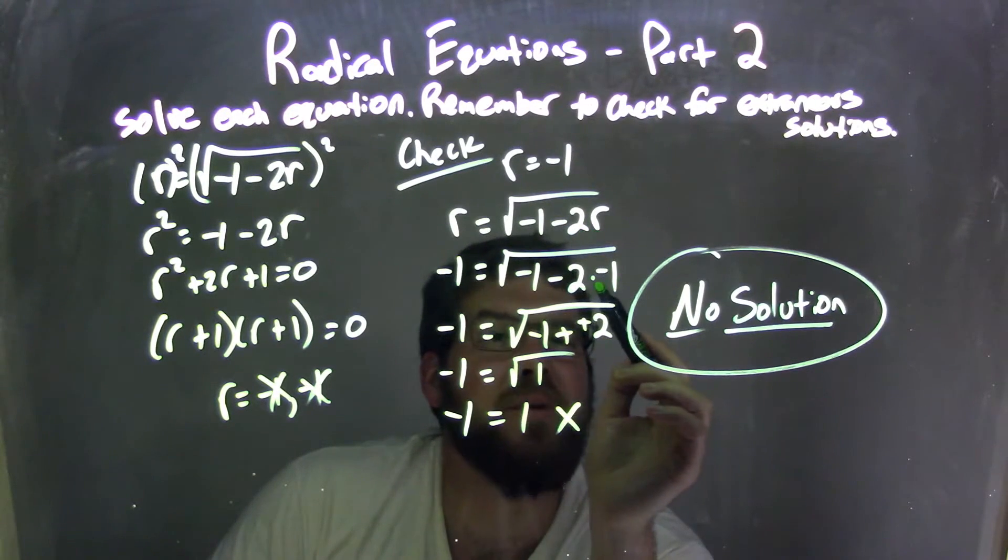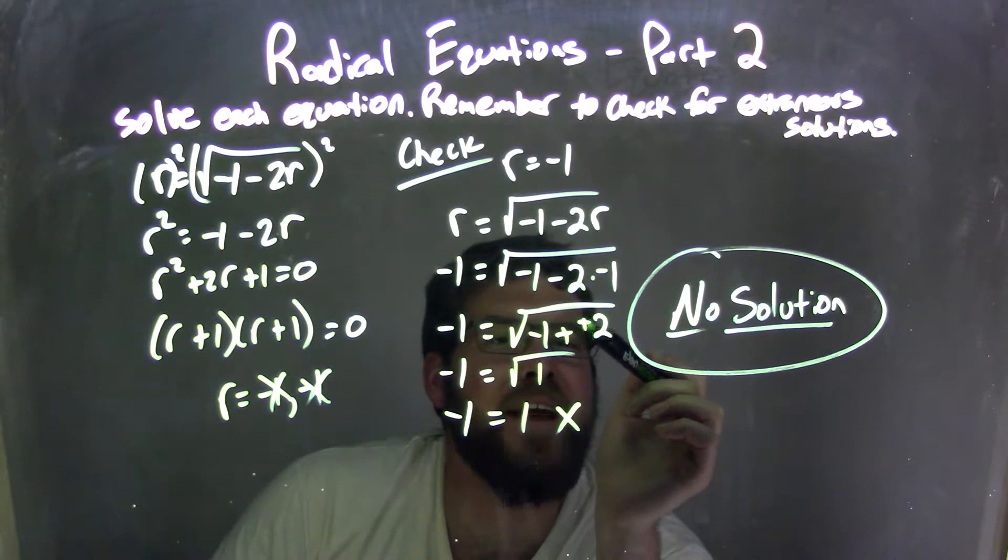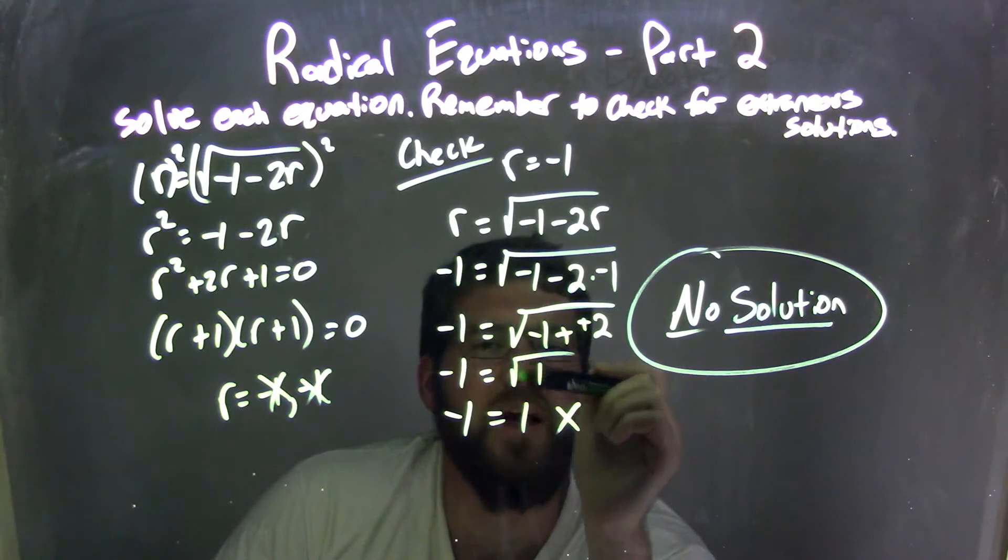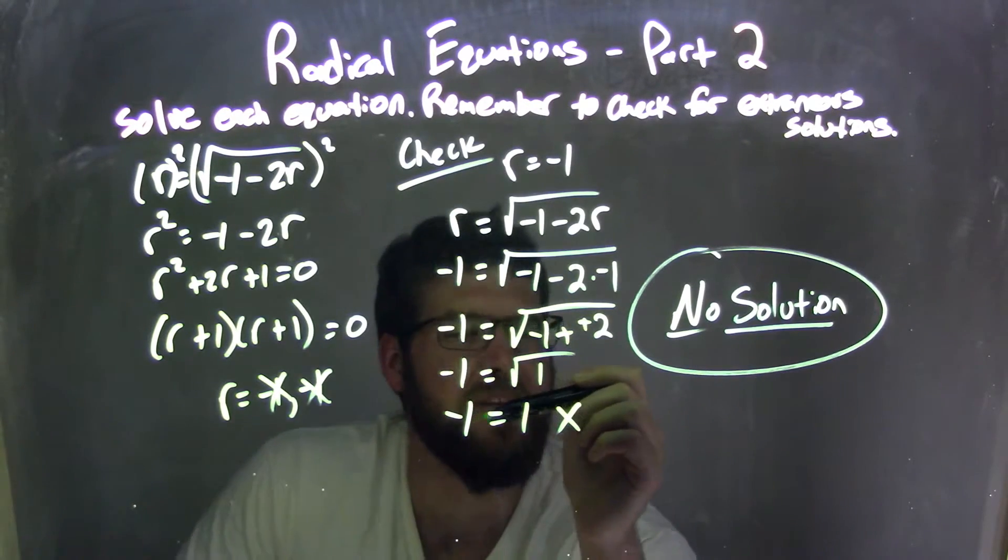We had 2 times negative 1, which is a negative 2. And minus a negative is plus a positive. So a negative 1 plus 2 is a positive 1. Square root of 1 is just 1. And the left-hand side was negative 1.